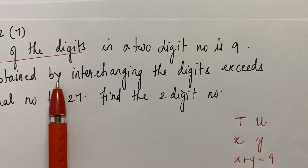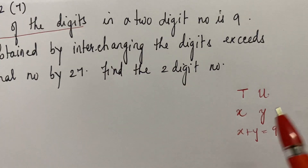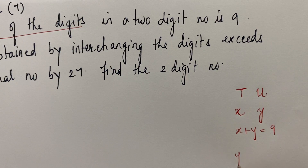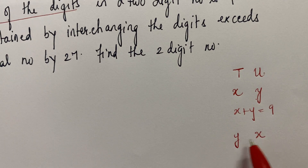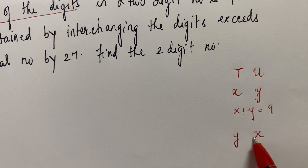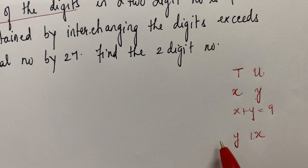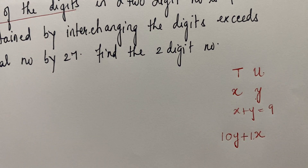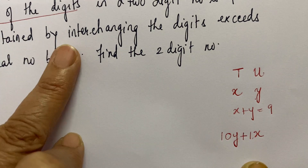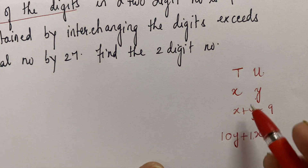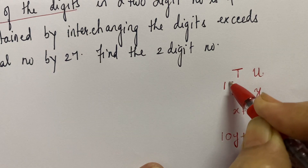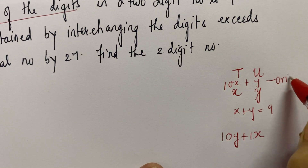Now, the number obtained by interchanging the digits — if you interchange the digits, the units place digit comes to the tens place and the tens place digit comes to the units place. Whenever you form a number with the digits, the units place digit is multiplied by 1 and the tens place digit is multiplied by 10. So the interchanged number formed will be 10y plus x, and the original number will be 10x plus y.